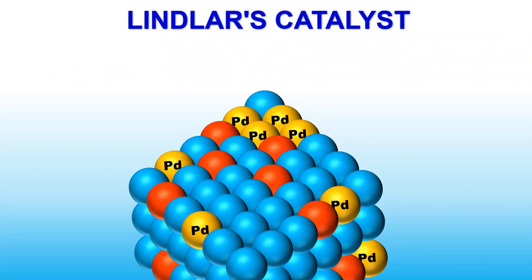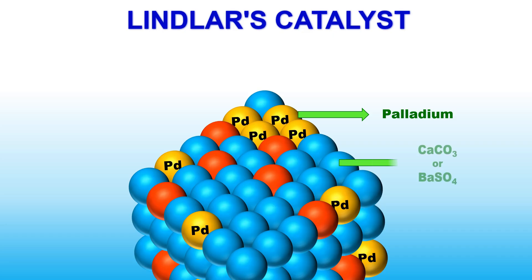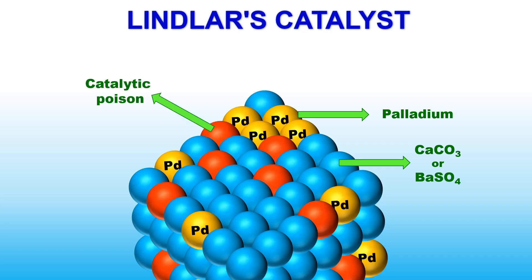Here is a simplified schematic representation of Lindlar's catalyst. You can see palladium metal atoms deposited on a solid support such as calcium carbonate or barium sulphate, with poison molecules surrounding them. These poison molecules block the activity of palladium, preventing hydrogenation beyond the alkene stage.